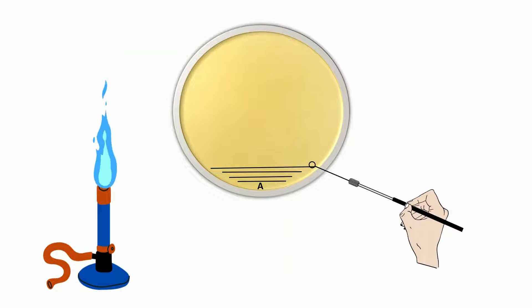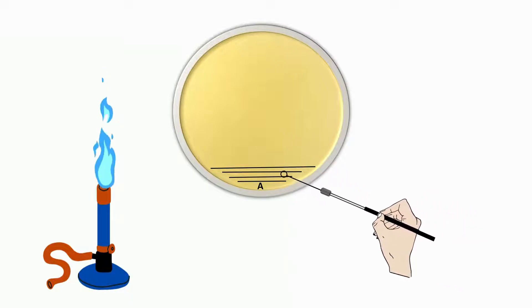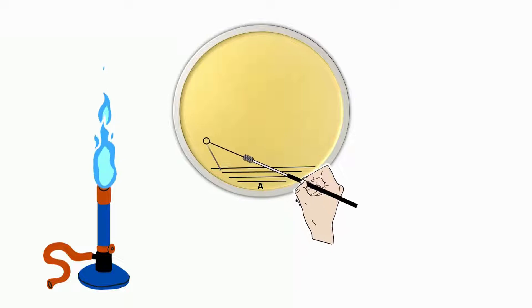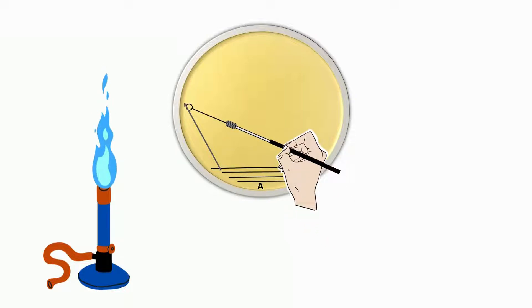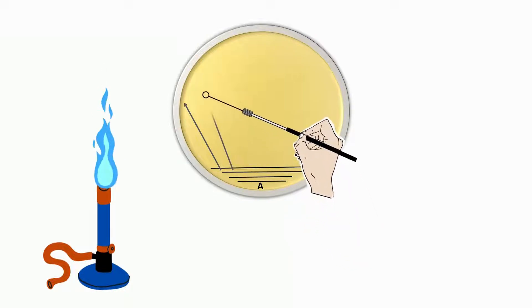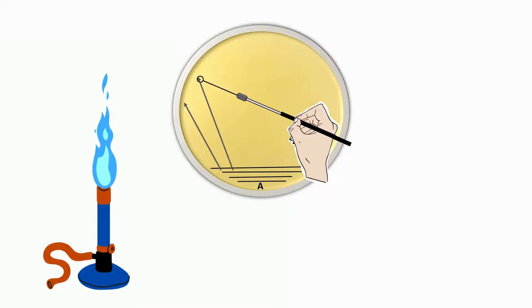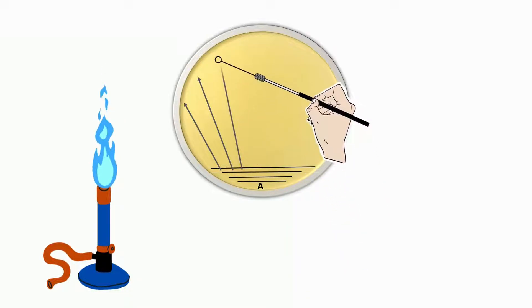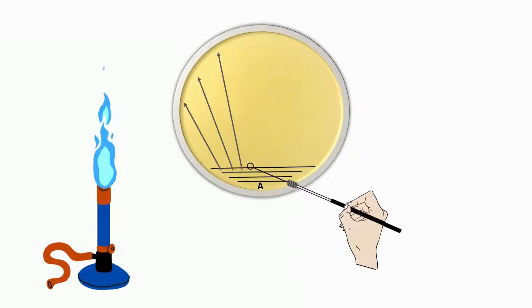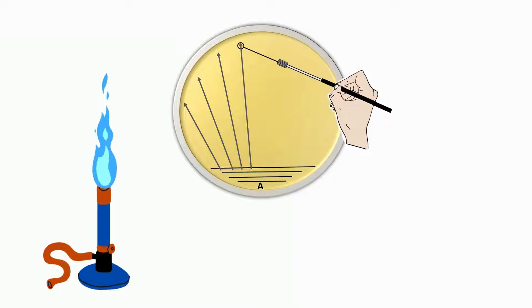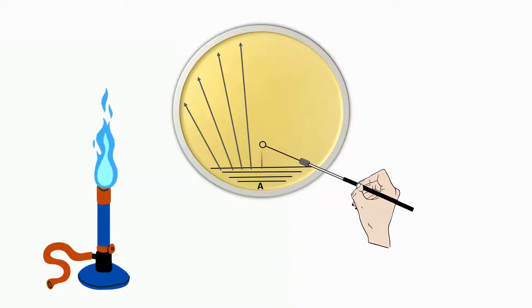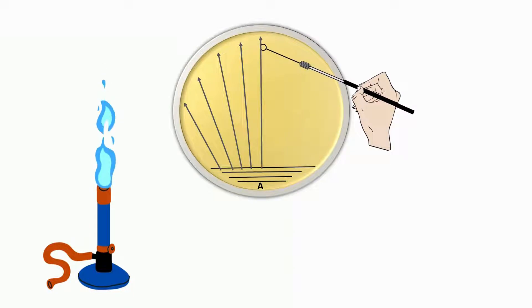Now we are going to streak the sample from area A in a radial direction. Touch the loop to the lines in area A and drag a straight line towards the opposite side of area A. About seven or eight straight streaks are generally performed.